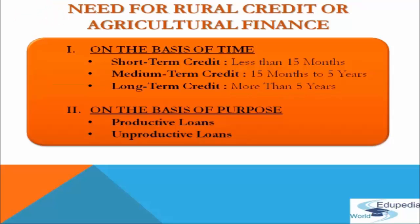Now we come to the credit needs of the farmer on the basis of purpose. Agriculture credit needs can be classified into two categories. The first is productive loans, which refers to loans that help the farmer in raising agriculture production and productivity — for example, loans taken to purchase seeds, fertilizers, farm implements, or for making permanent improvements on land. The second is unproductive loans, which refers to loans that do not help raise agriculture production and productivity — for example, loans taken for religious ceremonies, marriage, supporting family in times of crop failure, or settling old debts.